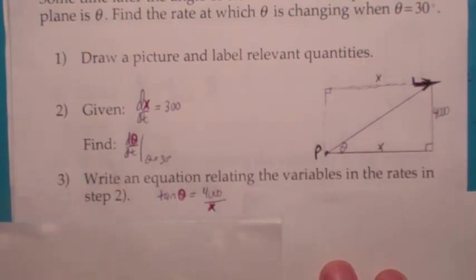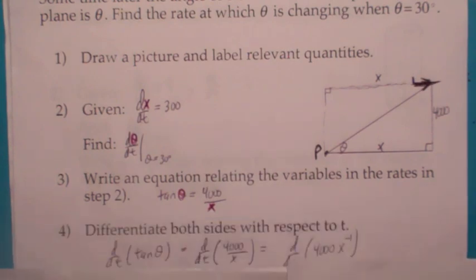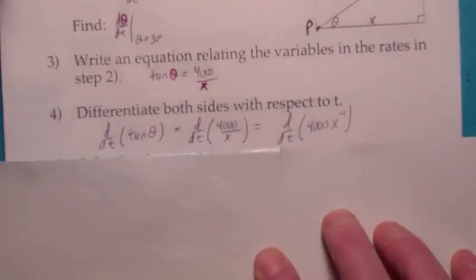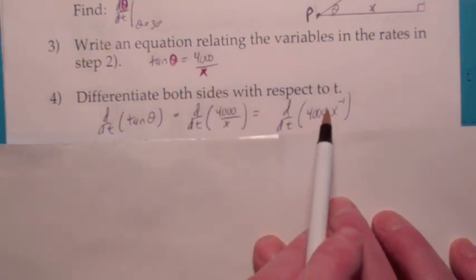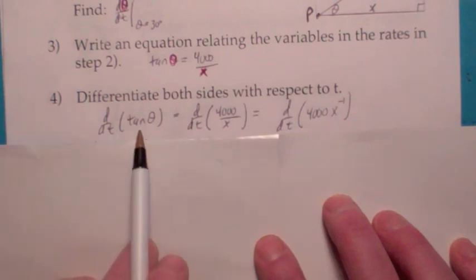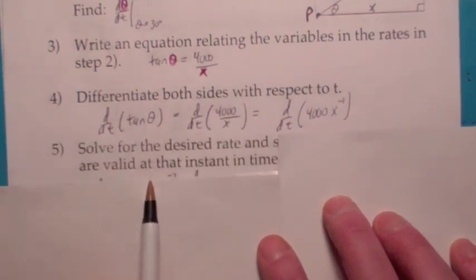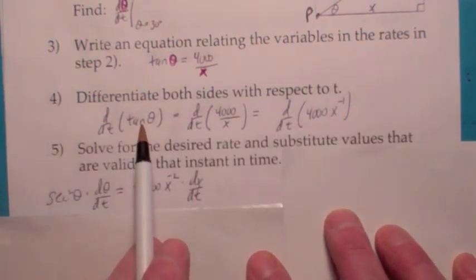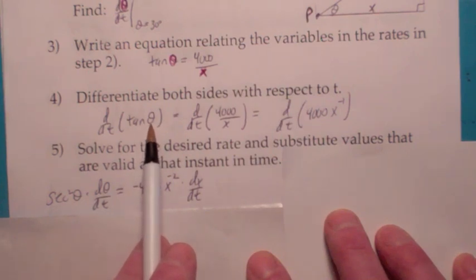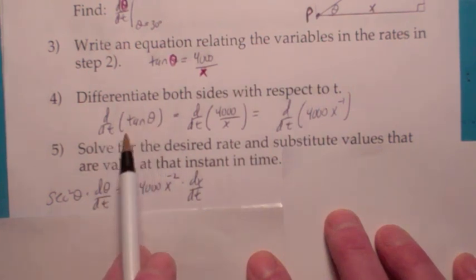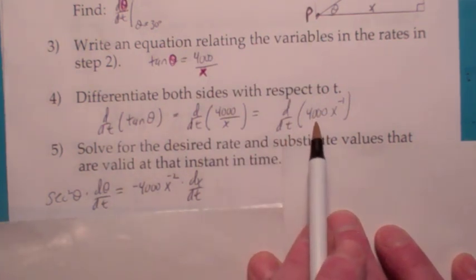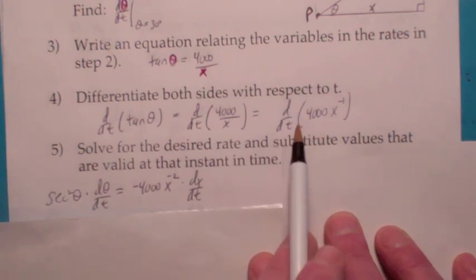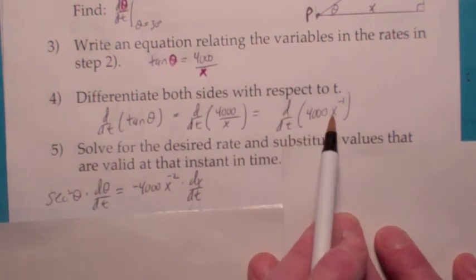So what you're going to do is differentiate both sides with respect to t. Notice that 4,000 over x can be written as 4,000 x to the negative 1. When you differentiate tangent of theta with respect to t, you get secant squared theta, but don't forget to take the derivative of what's inside with respect to t, so you pick up a d theta dt by the chain rule. Same thing over here, you get negative 4,000 x to the negative 2, but by the chain rule you pick up a dx dt.